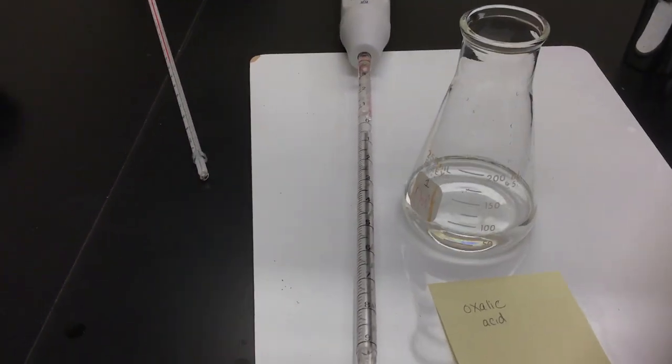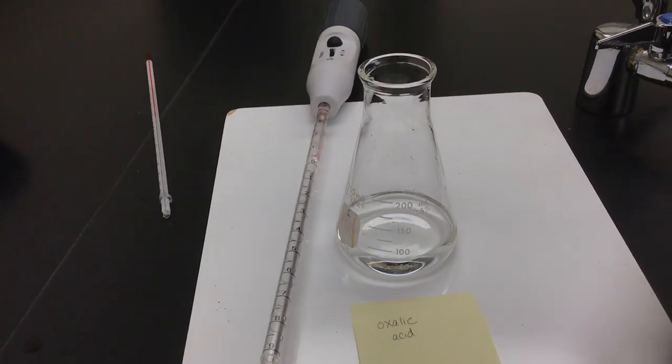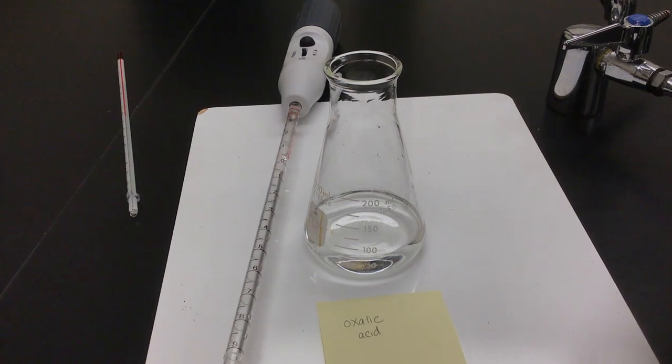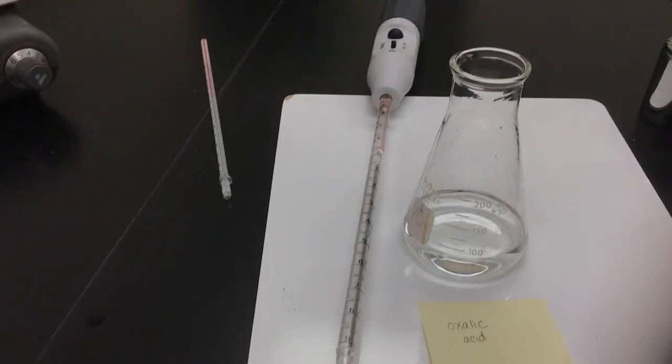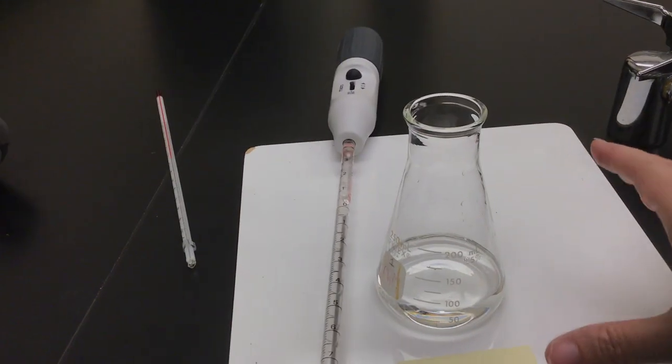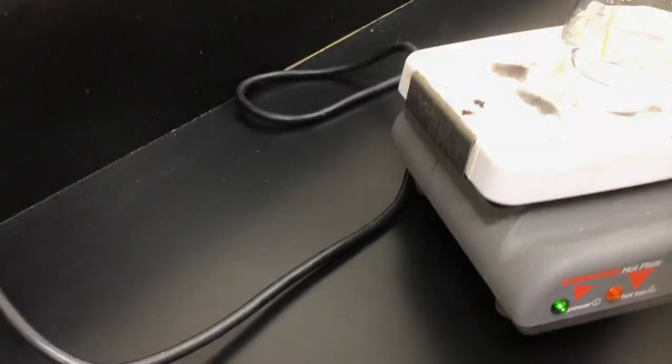Step three says that we're going to take this solution and heat it up to 85 degrees. Otherwise our titration in just a minute is going to be too slow. So I'm going to take my flask and put it on my hot plate here.